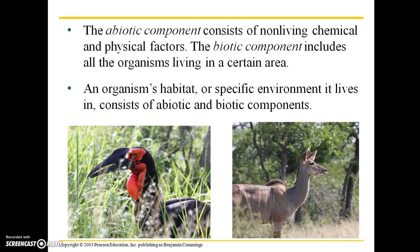The biotic component includes all of the living organisms in a certain area. The species of plants present in an environment is going to determine what primary consumers are there, like this grasshopper, and in turn the presence of those primary consumers is going to influence which secondary consumers, such as this southern ground hornbill, are able to live there.